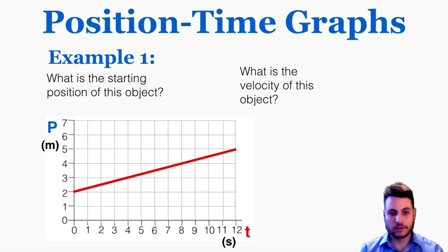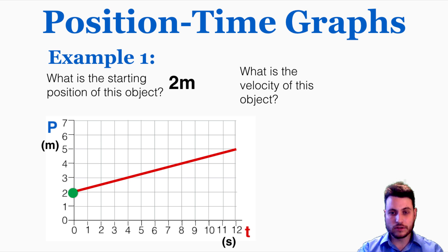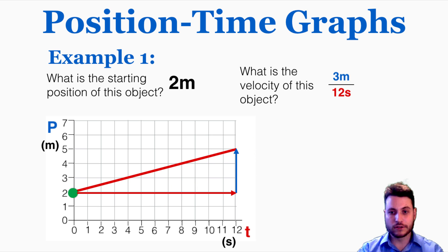Here's an example problem: what is the starting position of this object, and what is the velocity? The starting position is just the y-intercept, so that's 2 meters. The velocity requires taking the slope. The run is 12 seconds, the rise is 3 meters, so the slope is 3 meters divided by 12 seconds, which equals 0.25 meters per second. That's the velocity of the object on this position time graph.